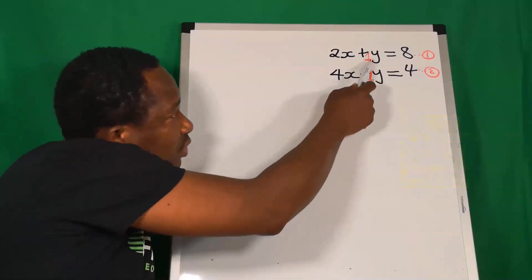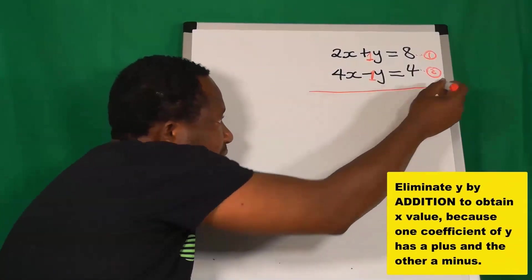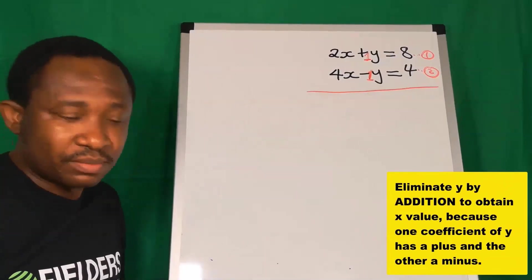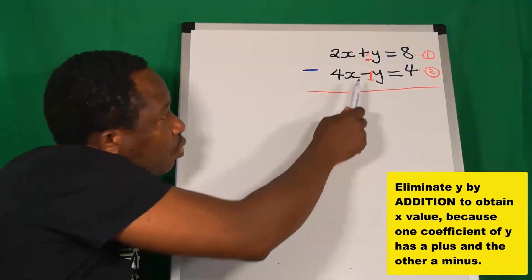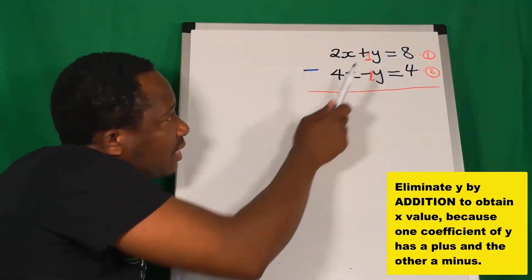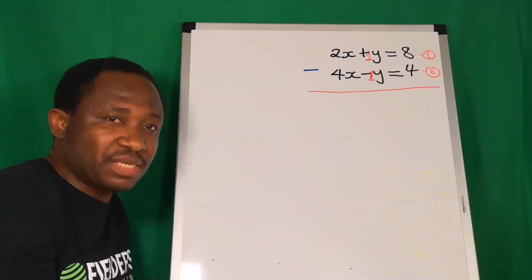Since the coefficients of y are the same, I can eliminate one of them. However, I'm not going to use a minus because one of the y here is having a minus. Let me just make this mistake of using this minus.